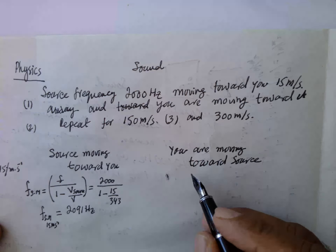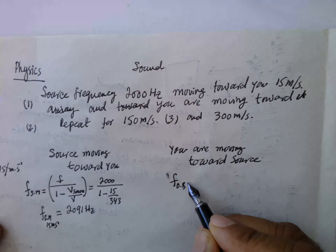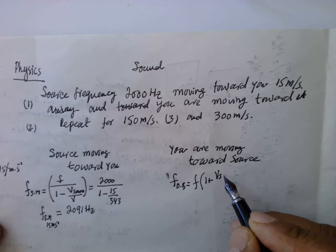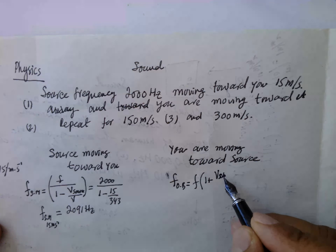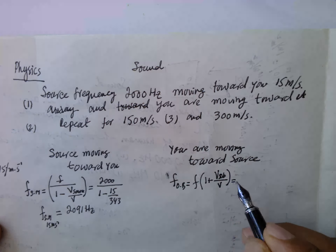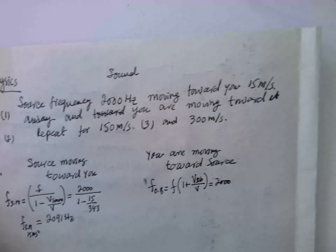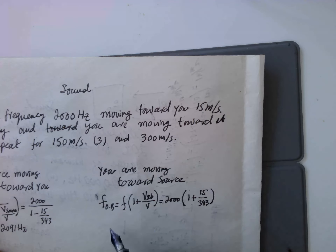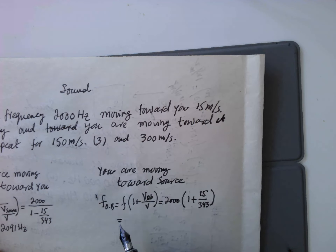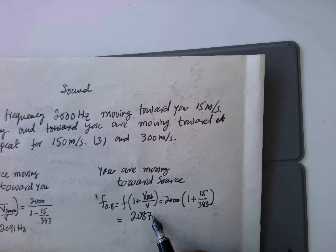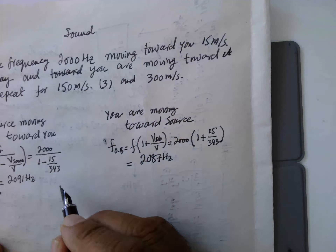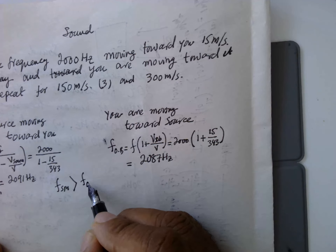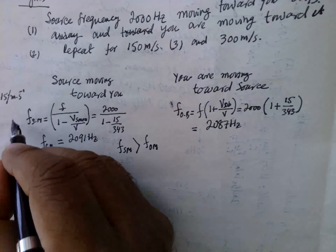Now, you are moving toward the source — the observer is moving. The frequency F equals F₀ times (1 plus V_observer over V_sound). So this equals 2000 times (1 plus 15 over 343), which equals 2087 Hz. Therefore, F for source moving (2091 Hz) is larger than F for observer moving (2087 Hz).